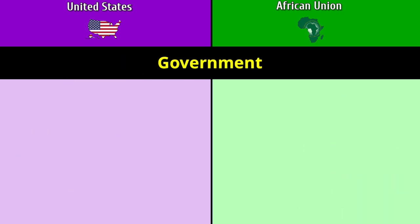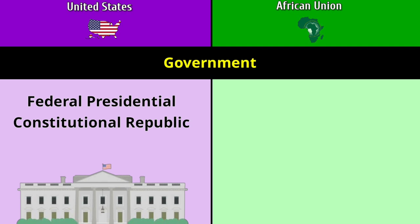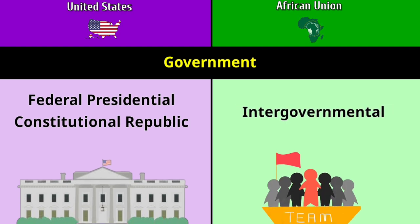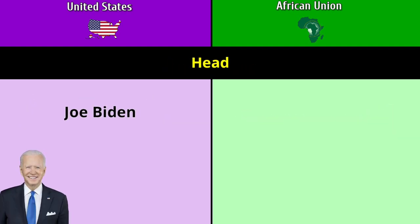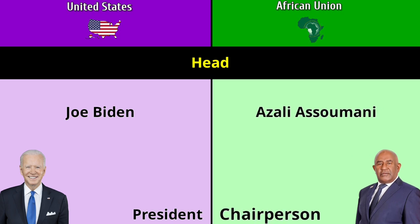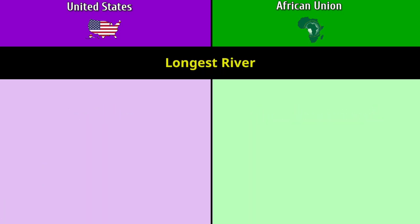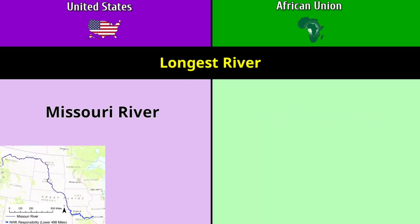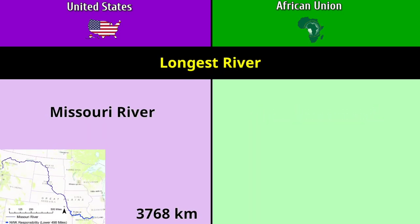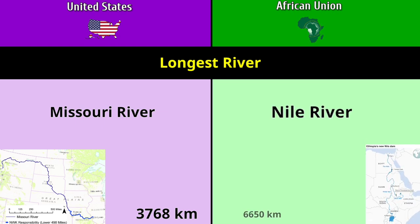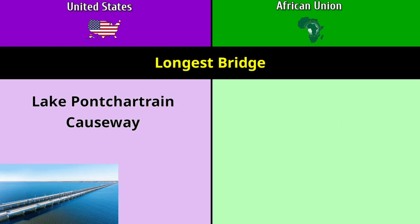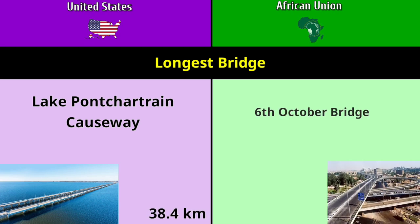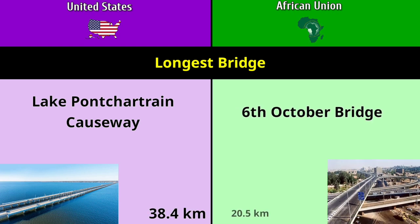Government: federal presidential constitutional republic versus intergovernmental organization. Head: Joe Biden, role is President, versus Azali Assoumani, role is Chairperson. Longest river: Missouri River at 3,768 kilometers versus Nile River at 6,650 kilometers. Longest bridge: Lake Pontchartrain Causeway at 38.4 kilometers versus the 6th of October Bridge at 20.5 kilometers.